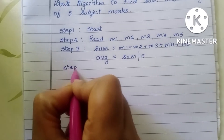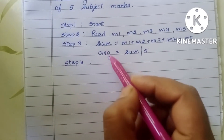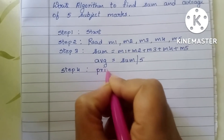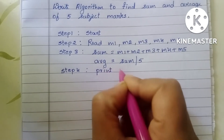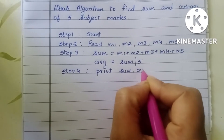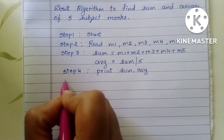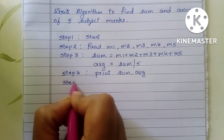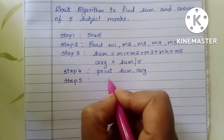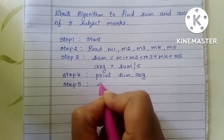In step four we have to display the output. The output is sum and average, so here we print sum, average. In step five we have to stop the algorithm, so write down the stop statement. An algorithm always starts with a start statement and ends with a stop statement.